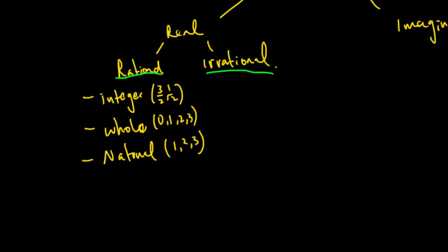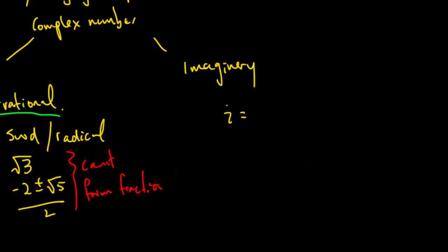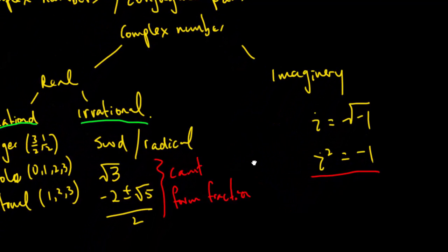Natural numbers don't include zero. Irrational numbers are things like pi, and often they involve radicals — for example, negative 3 under a square root, or expressions like negative 2 plus or minus the square root of 5, all over 2. These are irrational numbers because they can't be formed into simple fractions. The imaginary part is the square root of a negative number — specifically, the square root of negative 1 equals i, and i squared equals negative 1. Always remember that.